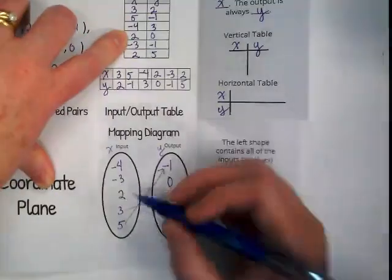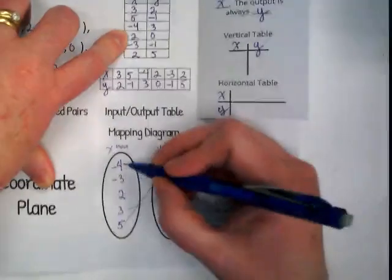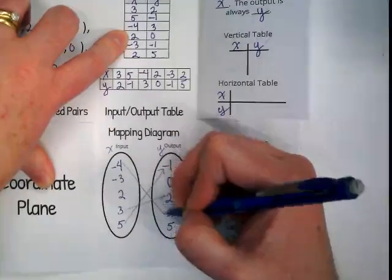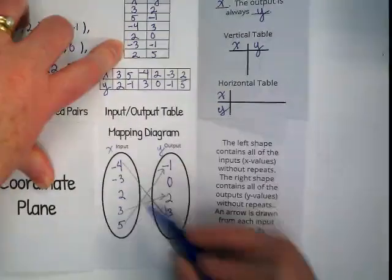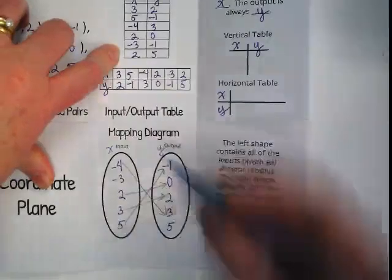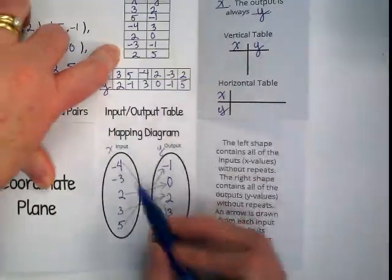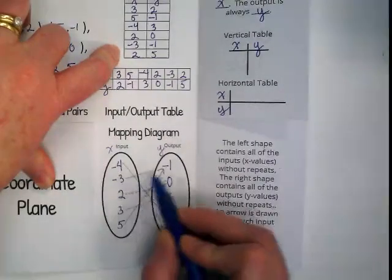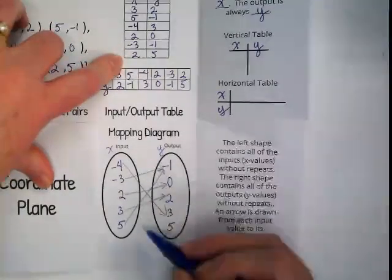Okay. Negative four, comma, three. Two, zero. Negative three, negative one. One. And two, five.